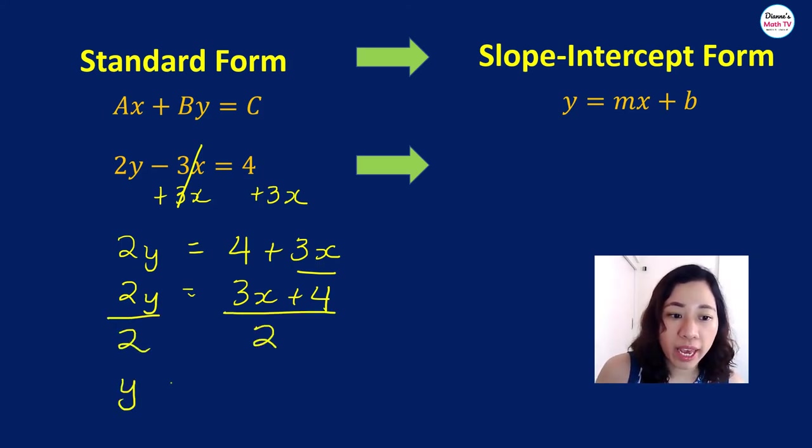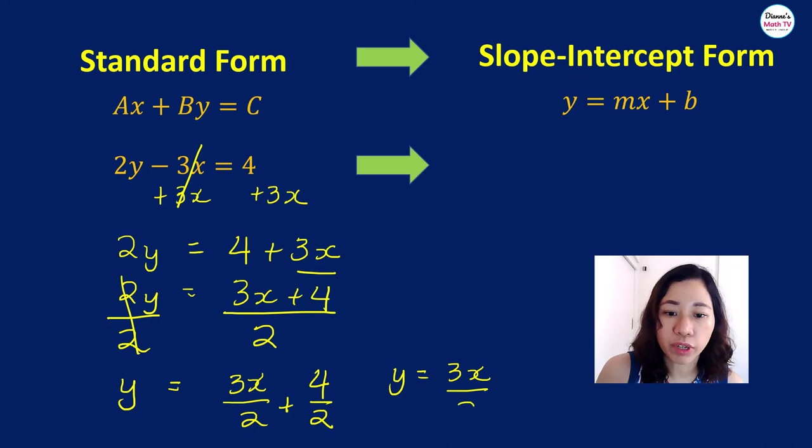So y, this gets cancelled out. What is this? Remember, you distribute that. This is 3x over 2 plus, what's next? 4 over 2. So what is that? Y is equal to 3x over 2 plus 2.